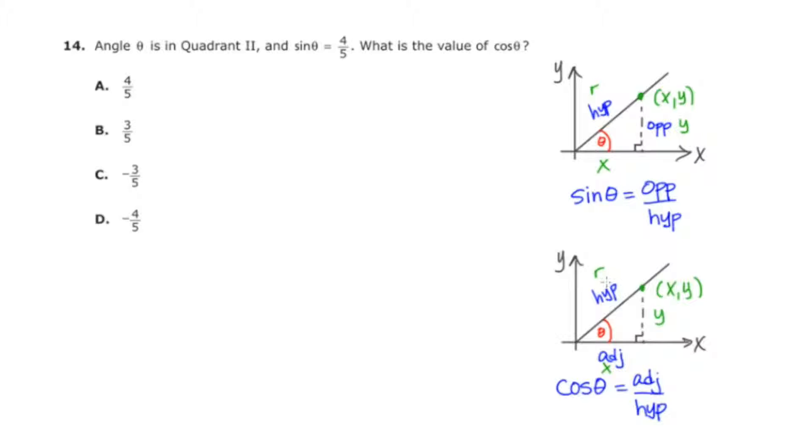And how this helps us is that we can redefine sine. And instead of thinking about it as opposite over hypotenuse, we can think about it as the ratio of y to r. So we can think about this as y over r. And we can think of cosine not only as adjacent over hypotenuse, but x over r.